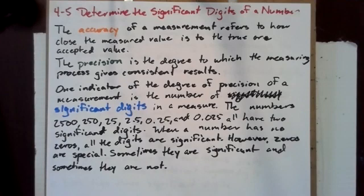When a number has no zeros, all the digits are significant. However, zeros are special. Sometimes they are significant and sometimes they are not.